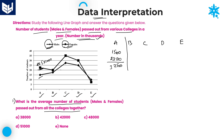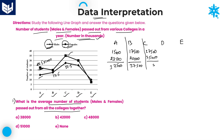For college B, males are 17,500 and females are 20,000, giving a total of 37,500. For college C, males are 27,500 (between 25 and 30) and females are 35,000, giving a total of 62,500.